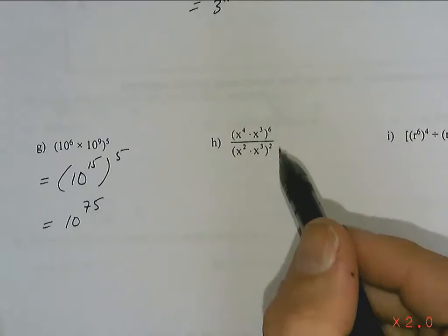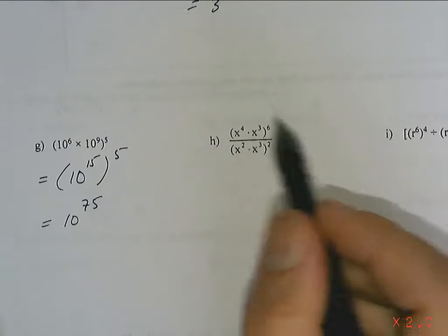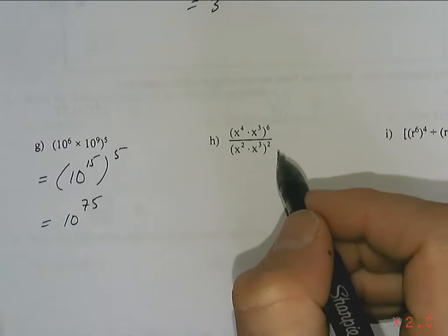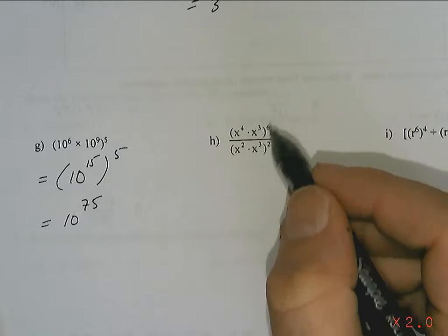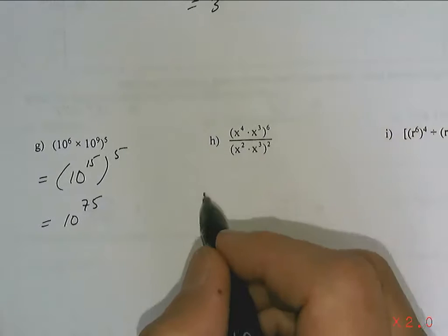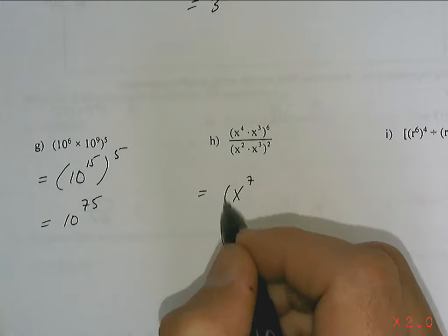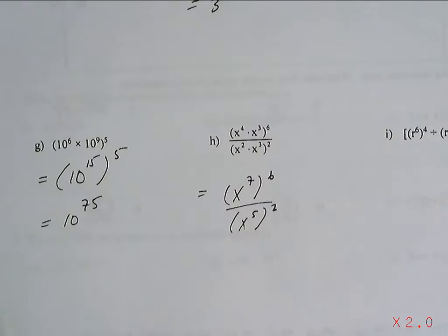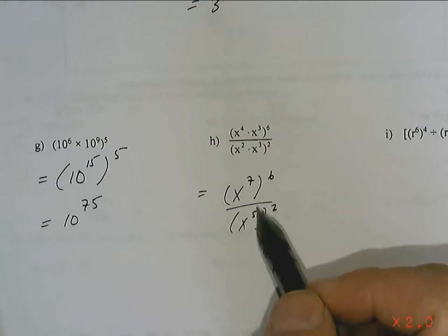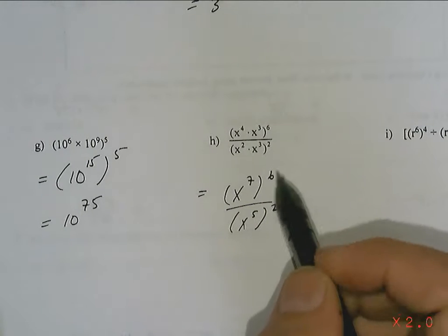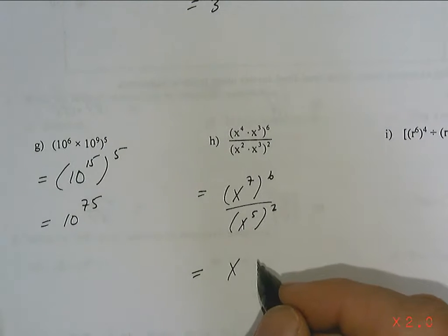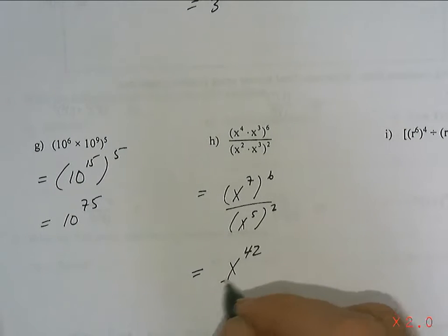Next, you got this one. Now, my hint to you is to try to do this. Work out the top first in a simplified form. Work out the bottom into a simplified form. And then do the division. So, the top is going to be X to the 7 all to the 6. The bottom is going to be X to the 5 all to the 2. Now, X to the 7 and X to the 5 aren't the same base. So, I'm going to do some more work on the top. And I'm going to get X to the 42. And X to the 10.